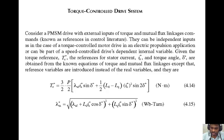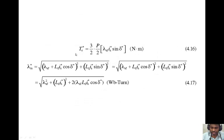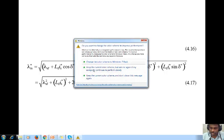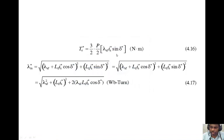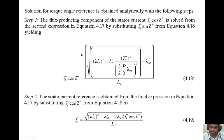If you see the torque equation, it is going to be (3/2)(P/2) into lambda_A times sine(del) plus (L_D minus L_Q) whole square times sine(2·del). If you simplify that, we get a torque equation making this motor dependent on torque angle. Suppose if this angle is going to be 90 degrees, then the torque is going to be maximum. In order to obtain the torque angle reference, we need to do a few analytical solutions.